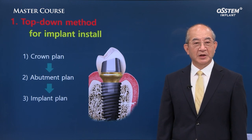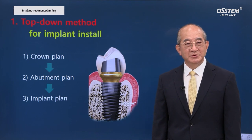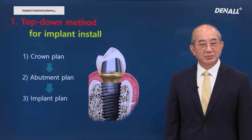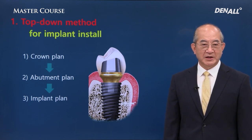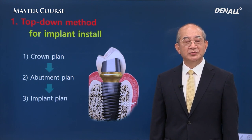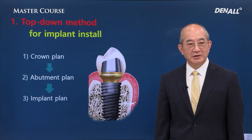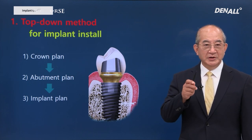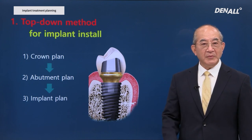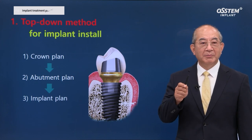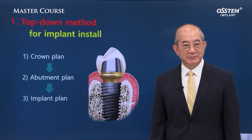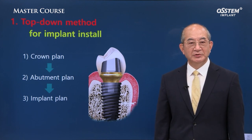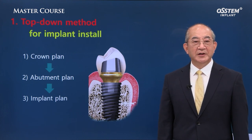If you have never placed an implant, you may be a bit baffled when a patient says they prefer implant over bridge treatment. In this case, in order to plan for implant placement in the posterior missing area, number 36, first you need to think about the crown which goes on the very top. Second, if you have decided upon the prosthesis, you need to think about the size and angle of the abutment, which connects the implant and crown. After that, you need to think about which diameter and length implant you're going to use.